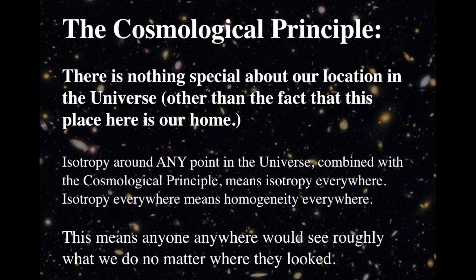The cosmological principle implies that isotropy, meaning looking the same in any direction that you look around any one point in the universe, combined with this cosmological principle means that it's isotropic everywhere. Isotropic everywhere means homogeneous everywhere, means it's the same stuff no matter where you go. So homogeneous everywhere would mean that no matter where you were in the entire universe, you would see roughly what you do no matter where you looked.